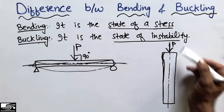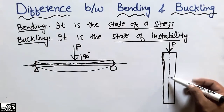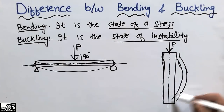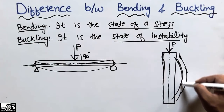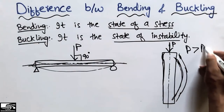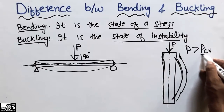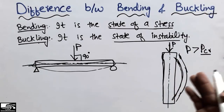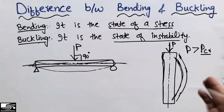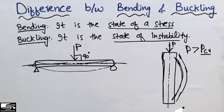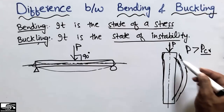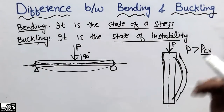Buckling can be defined as the state of instability. Due to this load acting along the axis of the column, the column will buckle. When this load is greater than P_critical — the critical load, which is the maximum load a slender column can bear — the column will start buckling. This is the state of instability in a structural member. There are no bending stresses created due to this load, but instability creates eccentricity moments and more moments will be created.